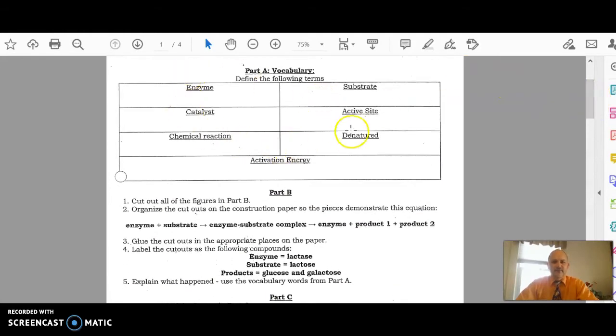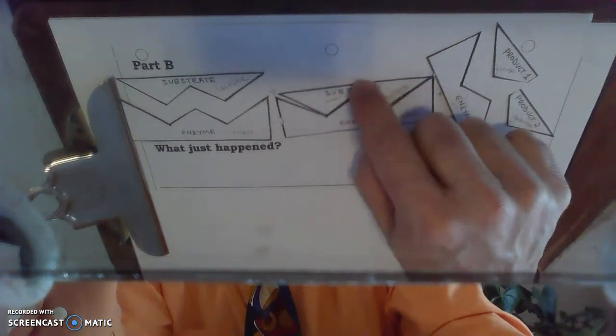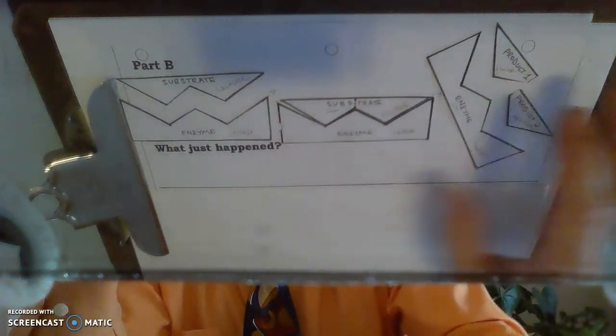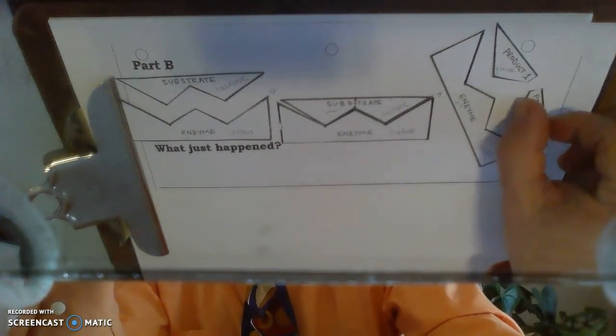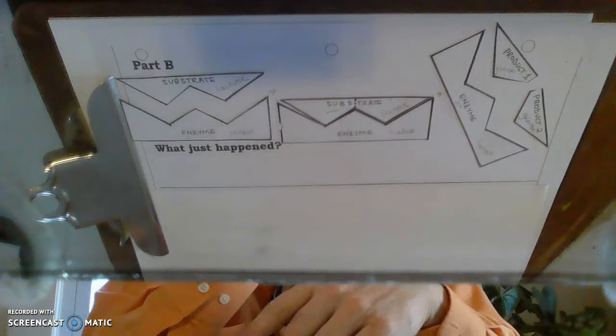Using these vocabulary words. Well, the enzyme reacted with the substrate because the substrate fits into the active site. And what did the enzyme do when it reacted with the substrate? Well, it looks to me like it took it apart. So you're going to explain what happened. So because the substrate fit into the active site, the enzyme reacted with the substrate, broke it apart, broke it down, into product 1 and product 2, which then left the active site. So we're going to explain what happened there.